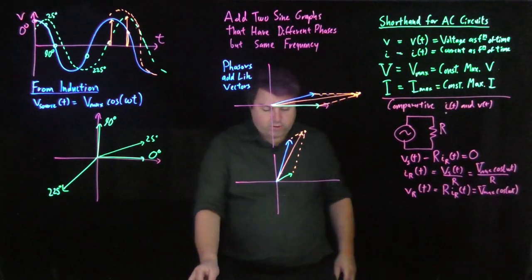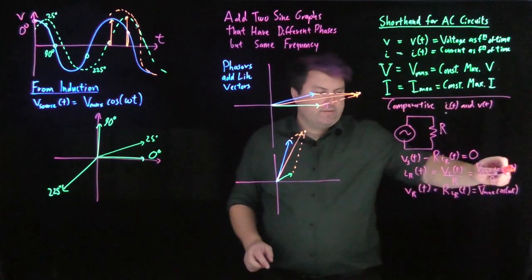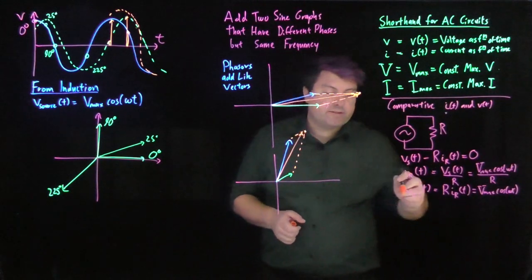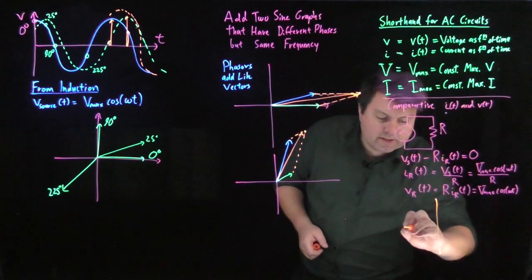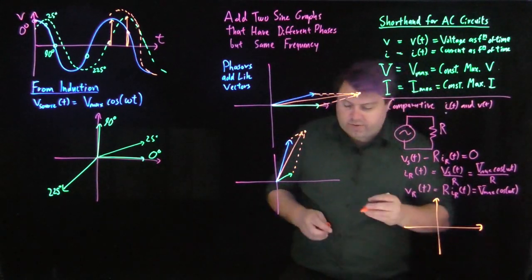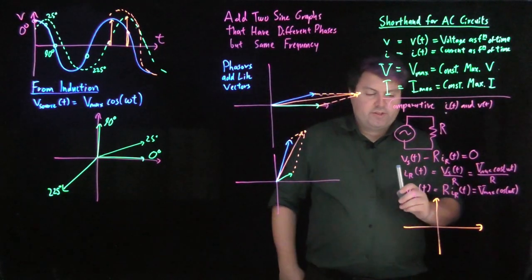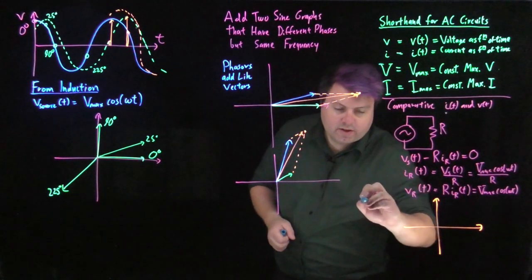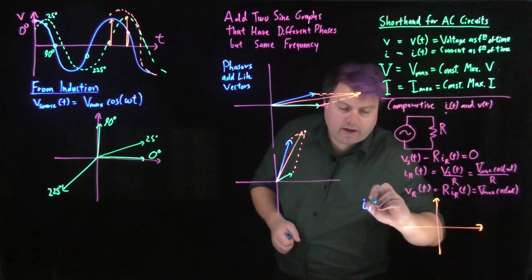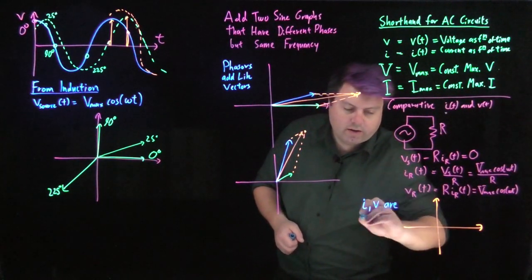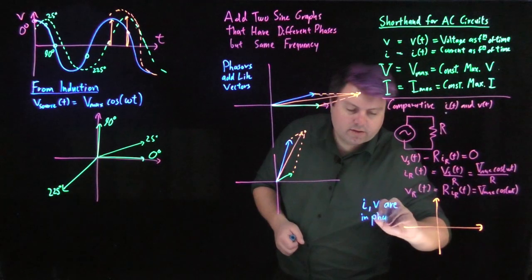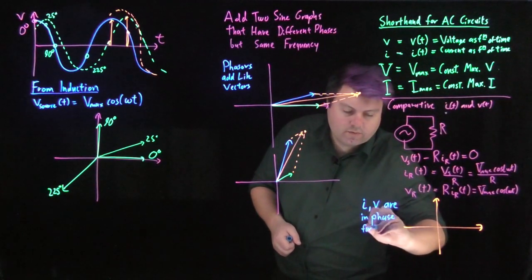And this is just going to be Vmax cosine omega t. What makes this all trivial is that we don't have any difference in phase for this. We will for other elements, I promise, but the first example is always the easiest and sometimes too trivially easy, is that our current and our voltage for resistors are in phase.